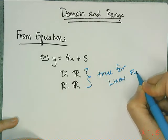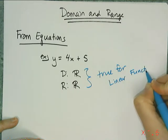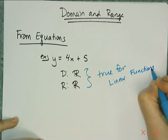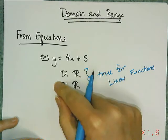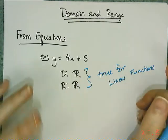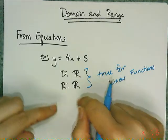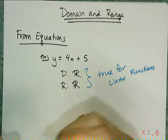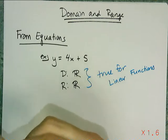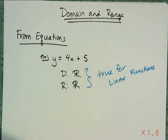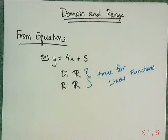Now, if I tell you ahead of time that I'm going to limit the domain — for example, you can only have positive x's — then of course your range is going to change in correspondence to that limiting. But if I just give you some linear function, then its domain and range are all reals.